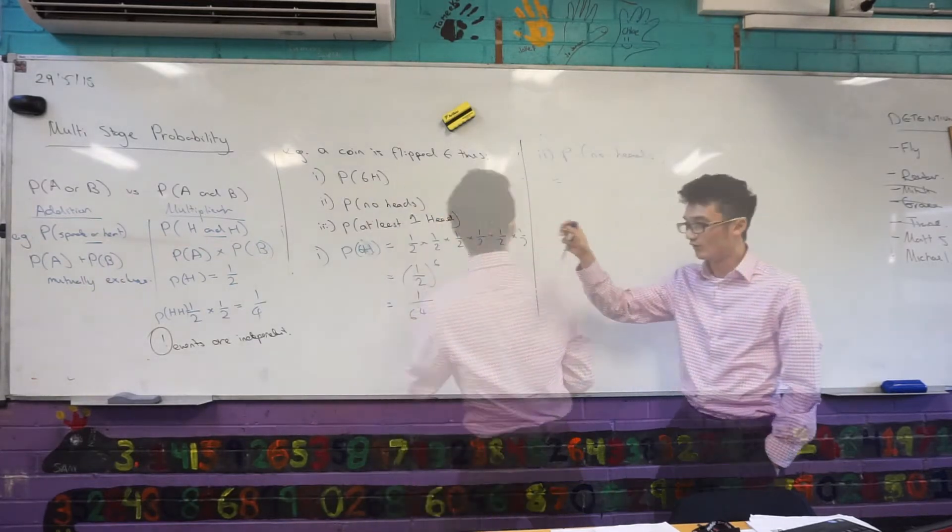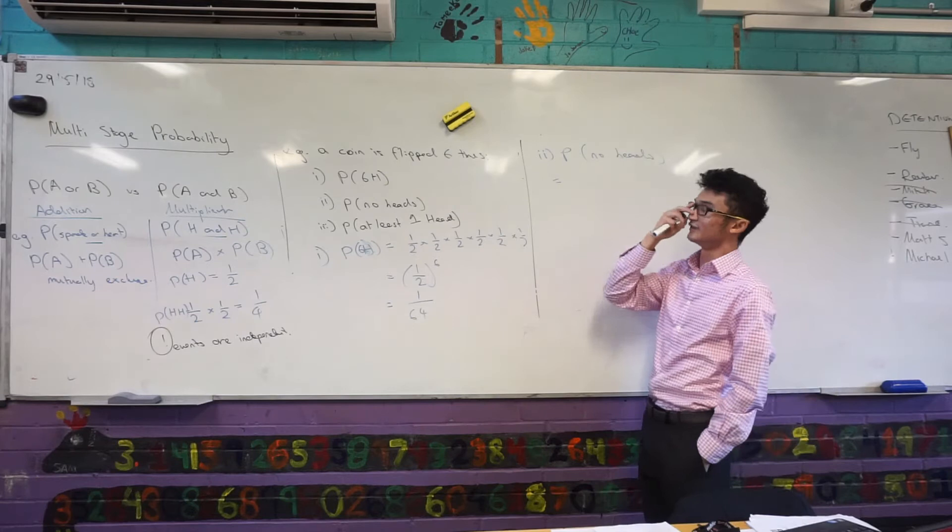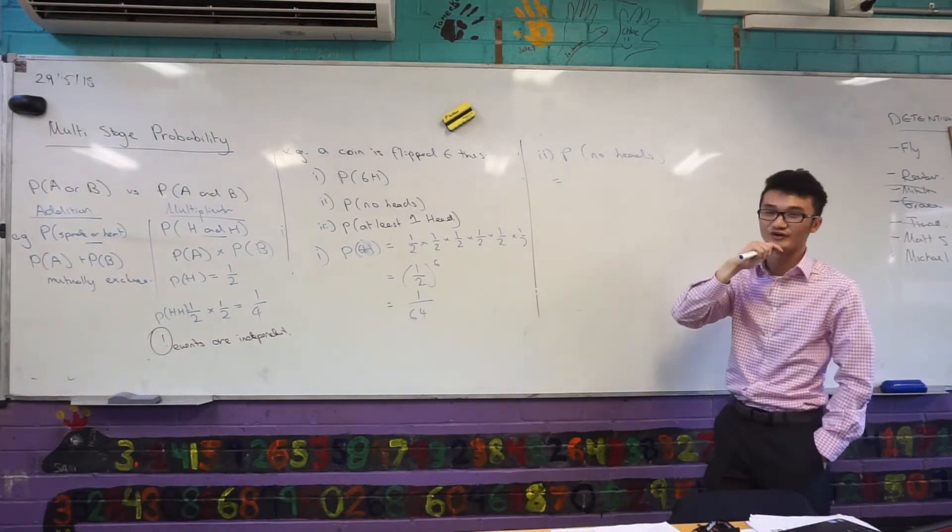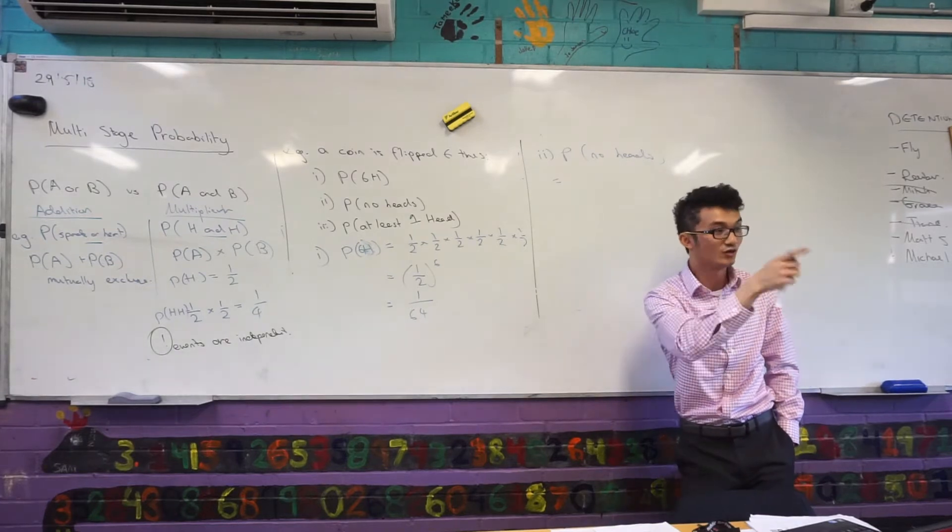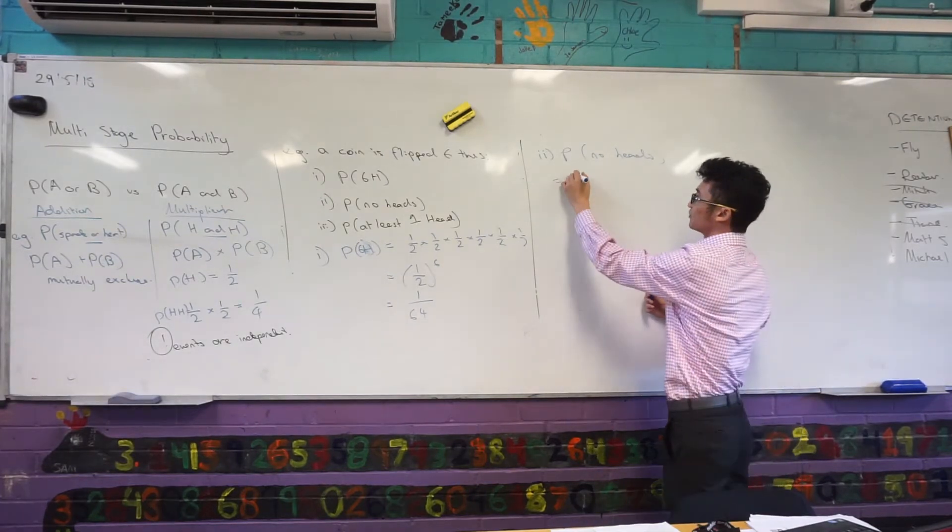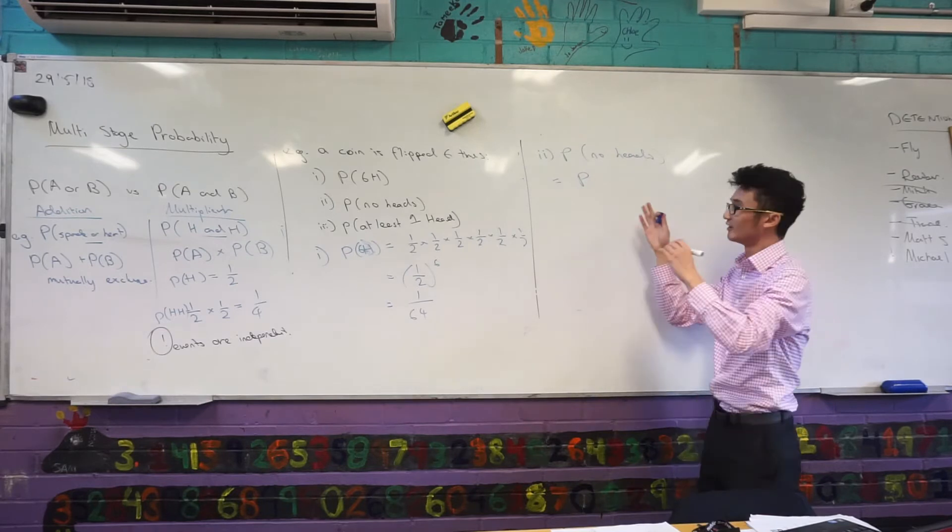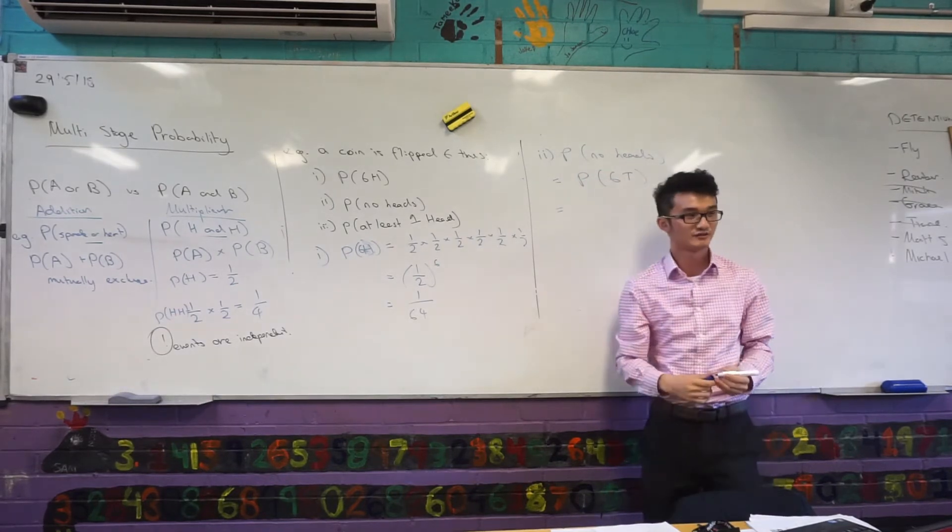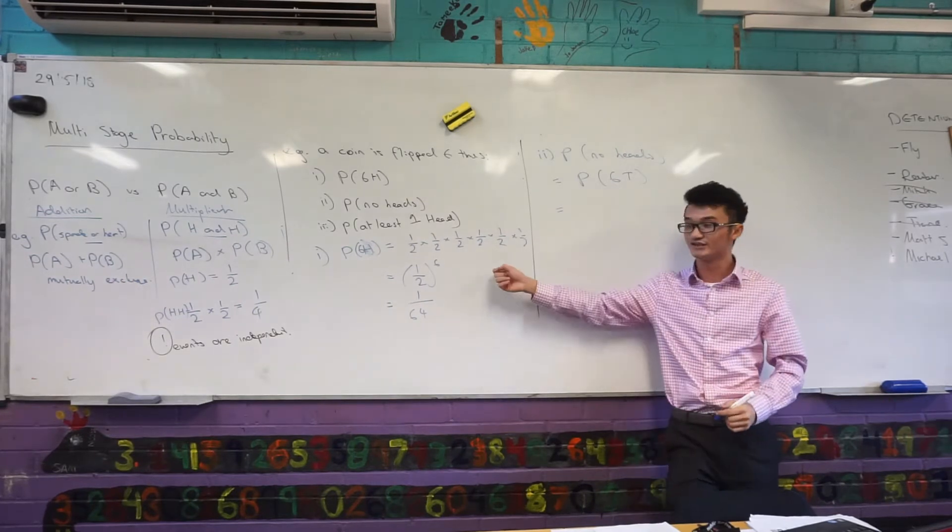When I'm looking at this, this is why I say some people just have an intuitive understanding of probability. The probability of no heads, what outcome is that actually? All tails. It's the opposite. The probability of getting six tails, how would you calculate that probability? The same way I did this.